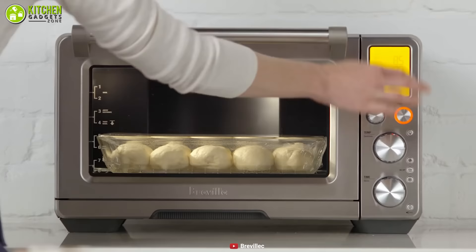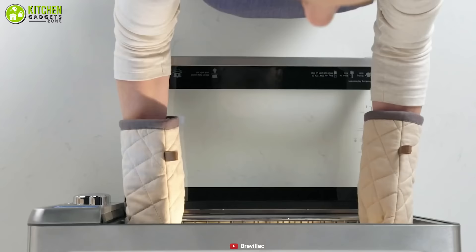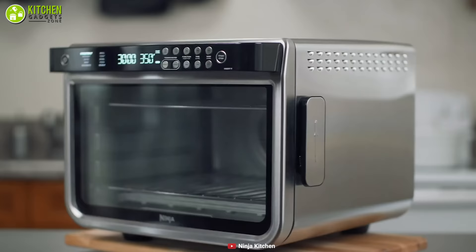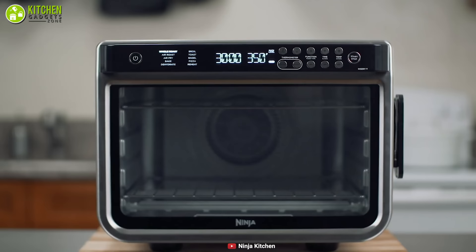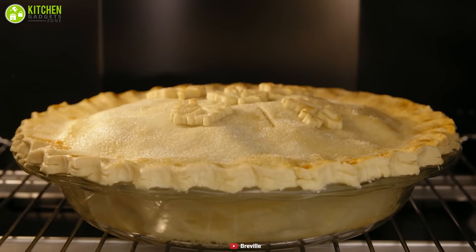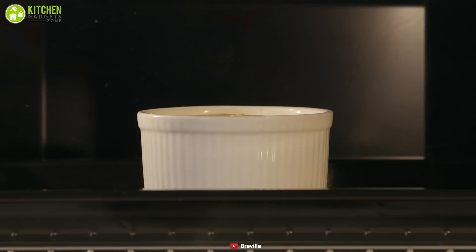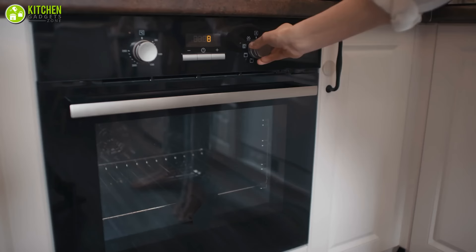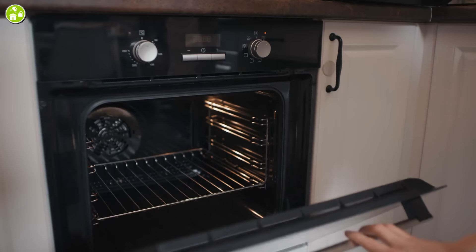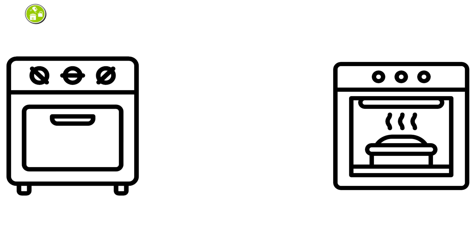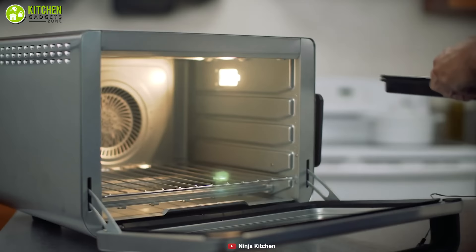Electric ovens are one of the most widespread types of ovens on the market. They're usually more affordable to acquire than gas ovens. Electric ovens provide more even heat distribution, so they are great for cooking cakes and slices. Electric ovens can be separated into two categories: conventional ovens and convection ovens. Both types look the same but can be gas or electric.